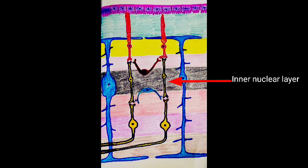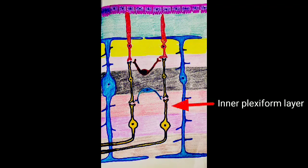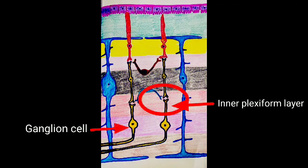Amacrine cells are situated in the inner portion of this layer and synapse with bipolar cells and also with the ganglion cells. Next is inner plexiform layer. In this layer, the axons of bipolar cells synapse with dendrites of ganglion cells and amacrine cells.